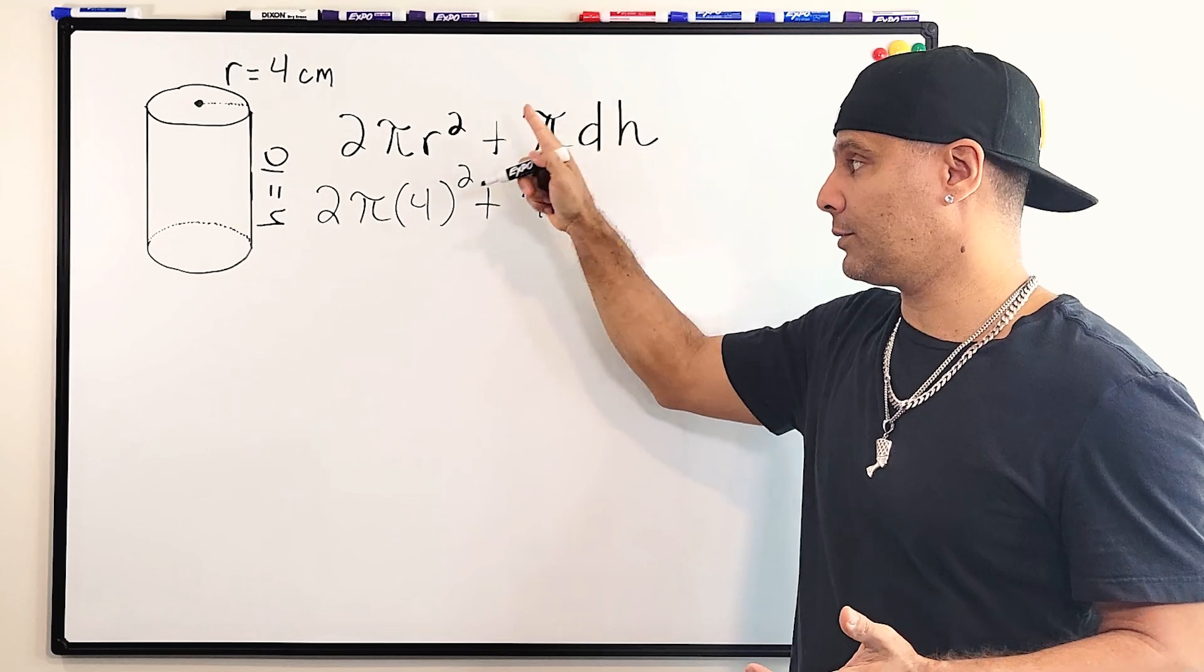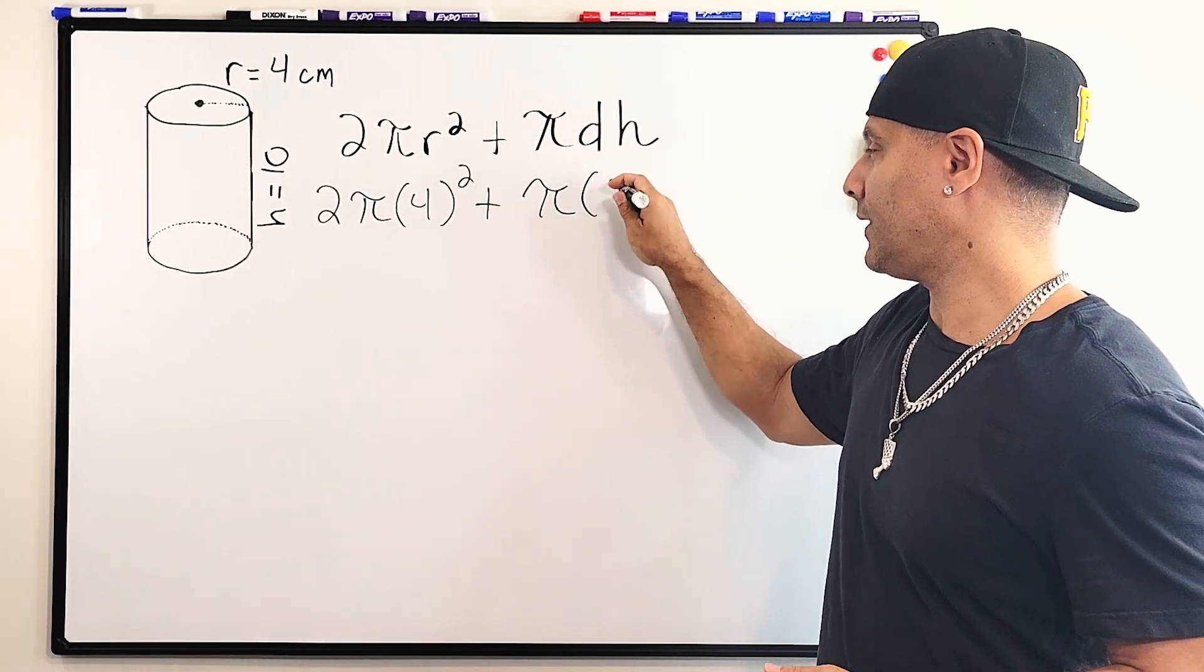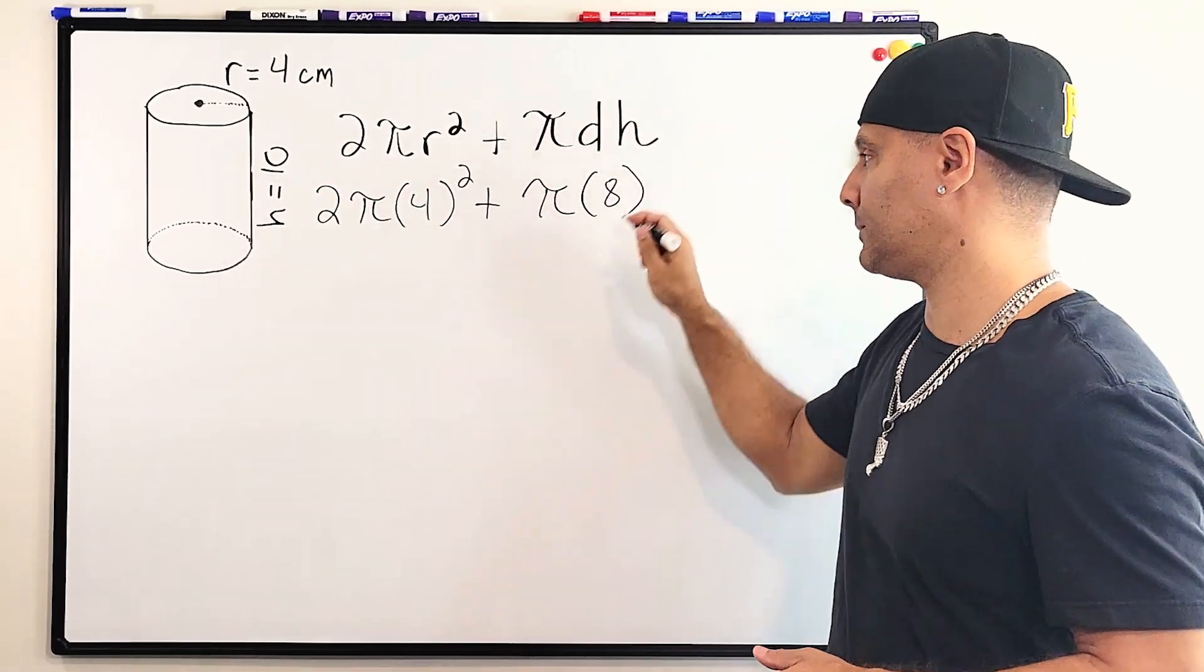And remember, the diameter is just double the radius. So if the radius is 4, the diameter is 8. And then we're going to multiply that by the height of the cylinder, which is 10 centimeters.